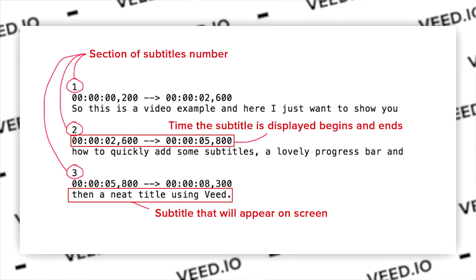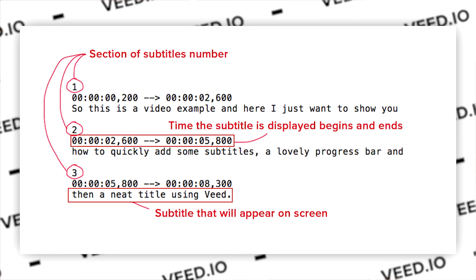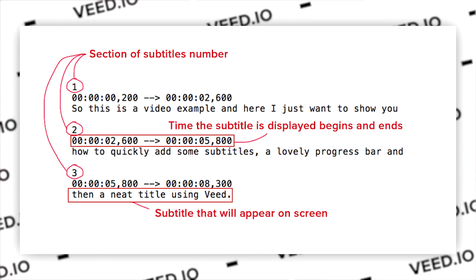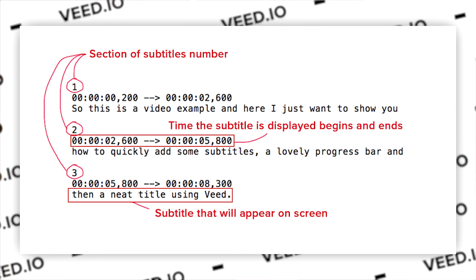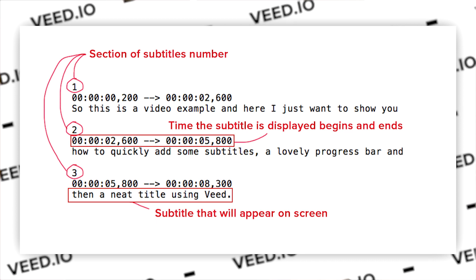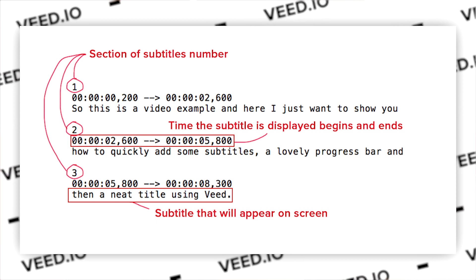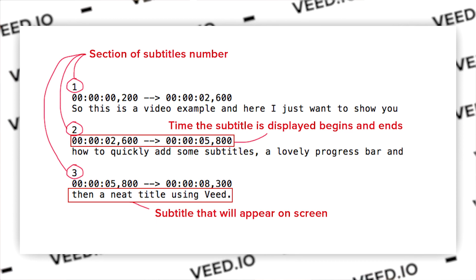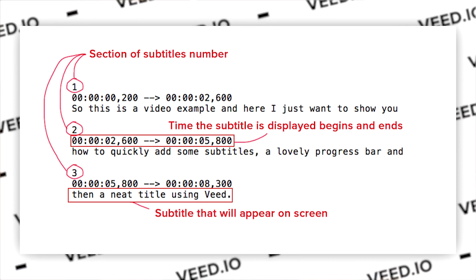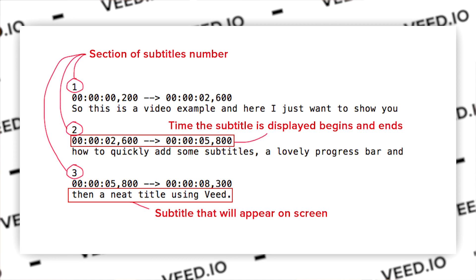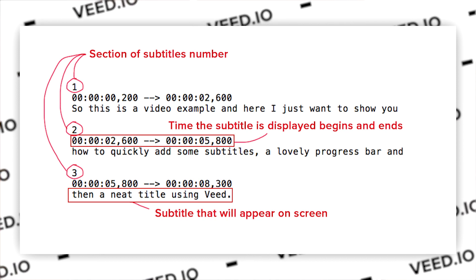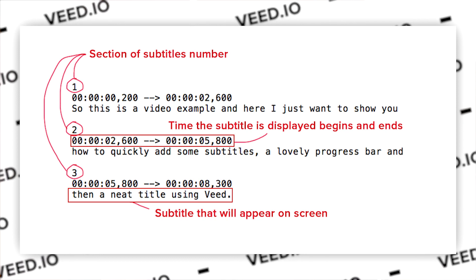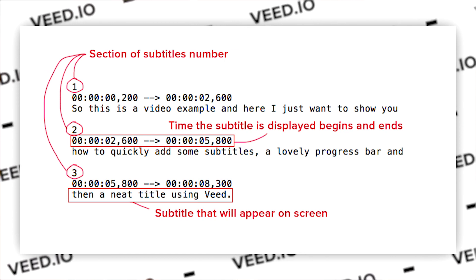Here's a quick example of an SRT file for a nine-second video. One subtitle is composed of three things: the number of that subtitle, the timecode for that subtitle, and then the actual text which is displayed on screen. As you can see, for the first subtitle displayed on screen it's section number one.